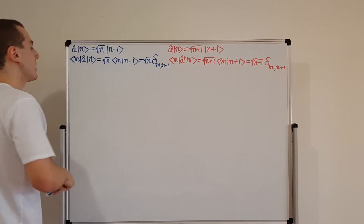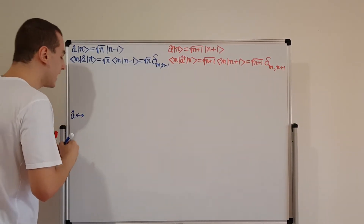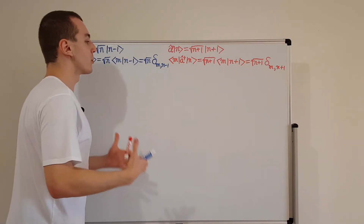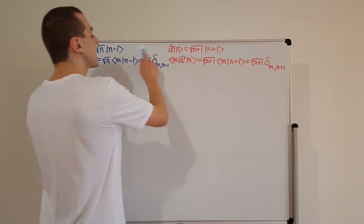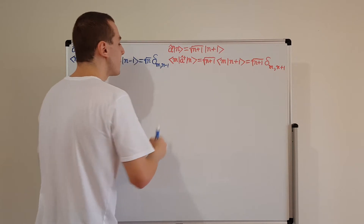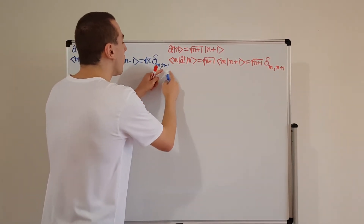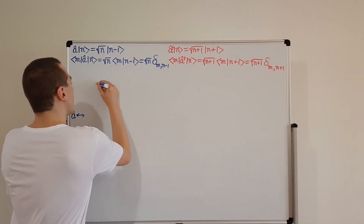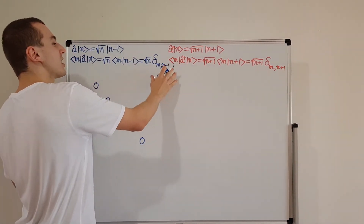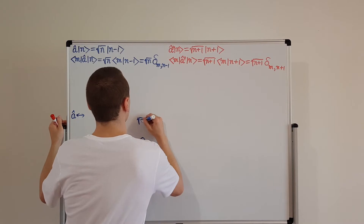Let's do â first. I'm going to write â with an arrow — not an equals sign — because this is a representation of the operator in a particular basis, specifically the energy eigenbasis. We know this is not on the diagonal because of the n−1, so it's going to be slightly off the diagonal — in fact, above the diagonal. Instead of having √1, √2, √3 on the diagonal, we're going to have them all off the diagonal: √1, then √2, then √3, one step above the main diagonal.